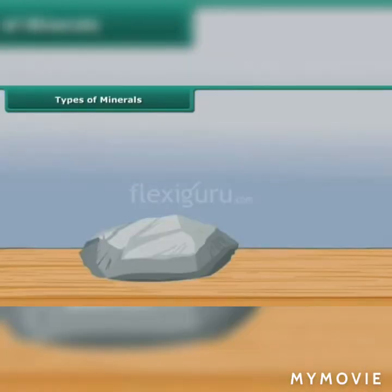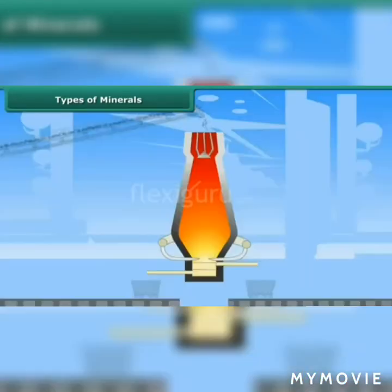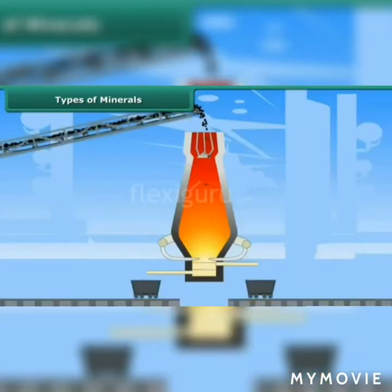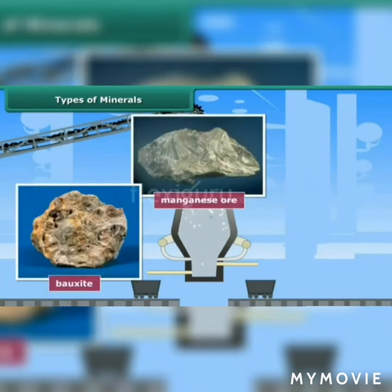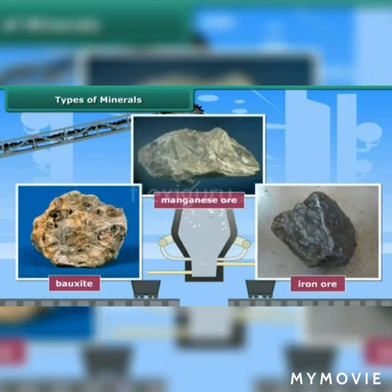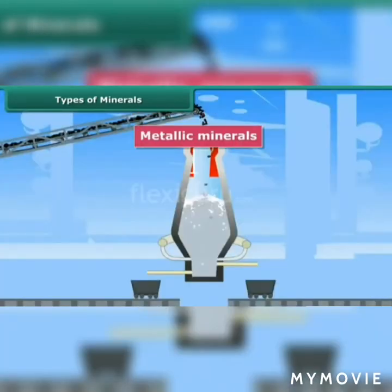Metallic minerals contain metal in raw form. Metals are hard substances that conduct heat and electricity and have a characteristic luster or shine. Metallic minerals may be ferrous or non-ferrous.